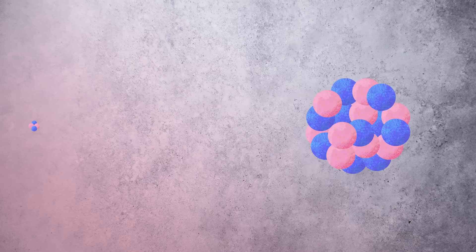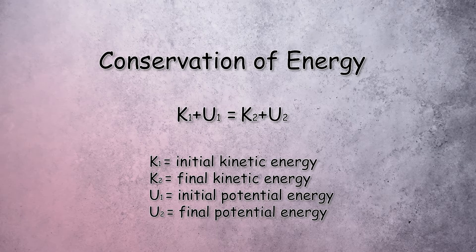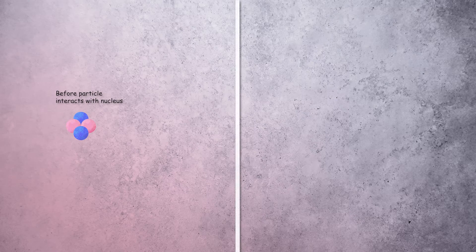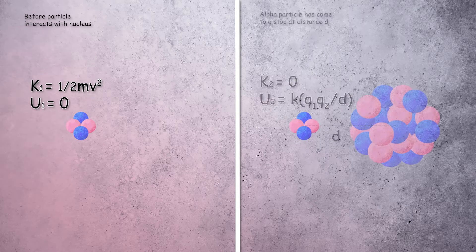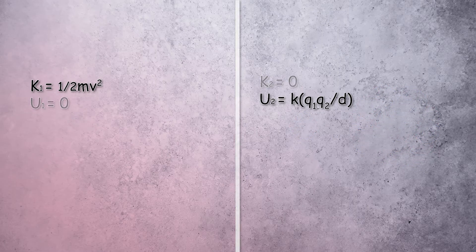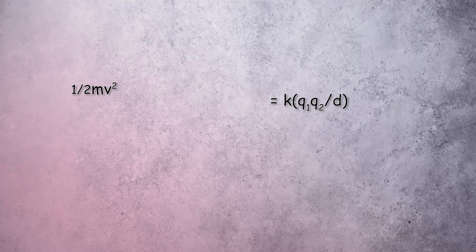When a particle is on a head-on collision with the nucleus, how close does it get before it's deflected backwards? Rutherford used the conservation of energy for an isolated system to calculate the distance of closest approach. He assumed that the kinetic energy of an incoming particle would convert completely to electrical potential energy as it experiences a repulsive force and comes to a stop just before hitting the nucleus, meaning the initial kinetic energy equals the final potential energy.